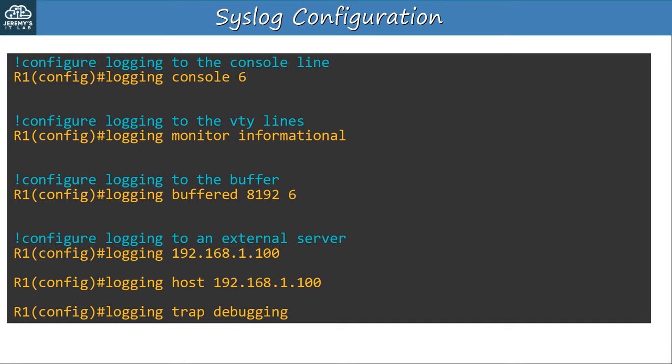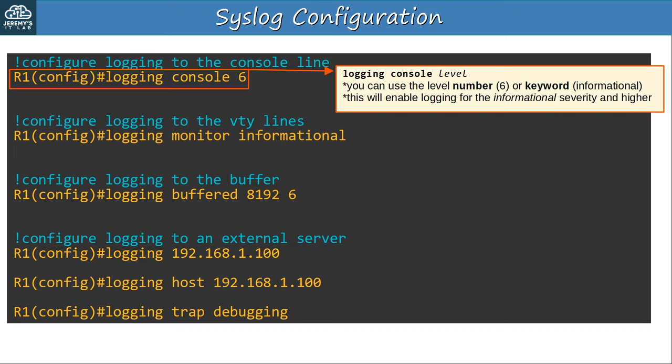Here are some basic syslog configurations. First, configuring logging to the console line — this is enabled by default. The command is 'logging console' followed by the level. I specified 6. Note that in all of these commands you can specify either the number or the keyword of the level. Also note that specifying level 6 doesn't only enable informational messages — it enables logging for informational severity and higher, meaning levels 6, 5, 4, 3, 2, 1, and 0. By default the console logs all messages including level 7 debugging, so setting level 6 slightly restricts what's displayed.